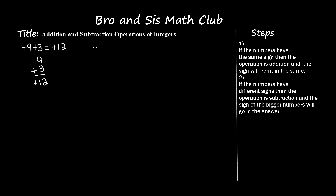Now let's do another example: negative 2 and negative 5. We still have the same signs, so the operation is still addition. I'll write 2 and 5 and add them: 2 plus 5 is 7. The sign will remain the same, so I bring the negative sign down. Negative 2 and negative 5 equal negative 7 — I'm sorry, I wrote positive 7 up there; it should be negative 7.